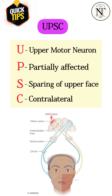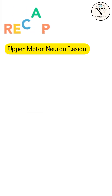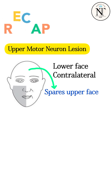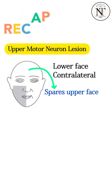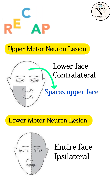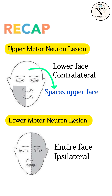In upper motor neuron lesion, the face is affected partially on the contralateral side, which means the opposite side. To summarize: upper motor neuron lesion affects the lower face on the contralateral side, while lower motor neuron lesion affects the entire face on the ipsilateral side.